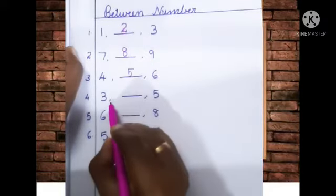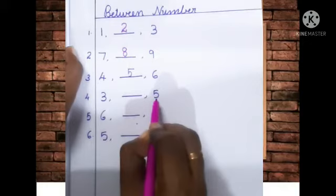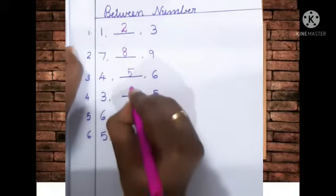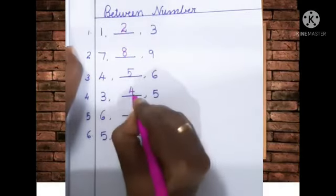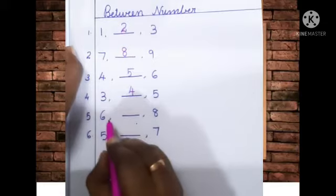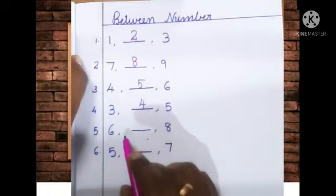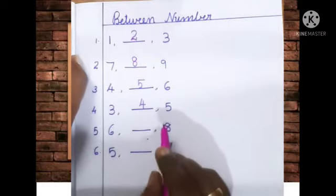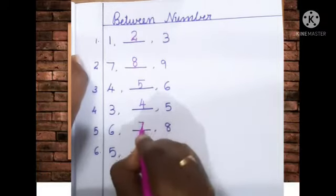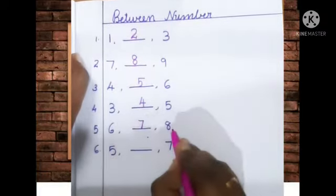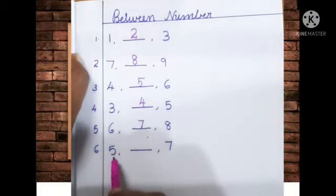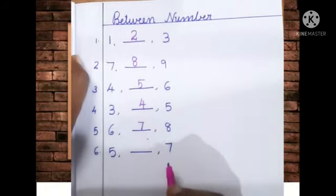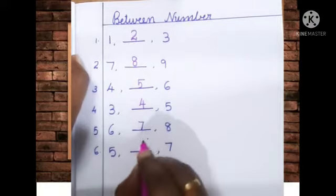Now tell me which number comes in between three and five? Yes, correct — four. Three, four, five. Then, which number comes in between six and eight? Correct — seven. Six, seven, eight. Now tell me which number comes in between five and seven? Very good — six.